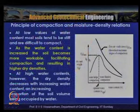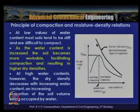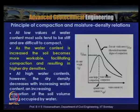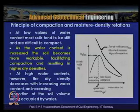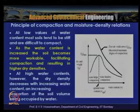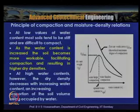At low water contents, most soils tend to be stiff and difficult to compact. As water content increases, the soil becomes more workable due to lubrication, facilitating compaction and resulting in higher dry densities. The ZAV line is the theoretical maximum compaction — water helps compaction on the dry side of optimum and hinders it on the wet side.